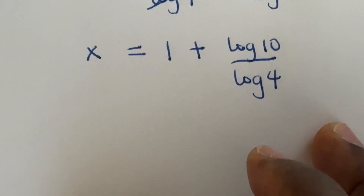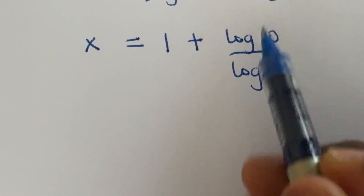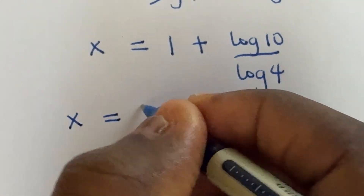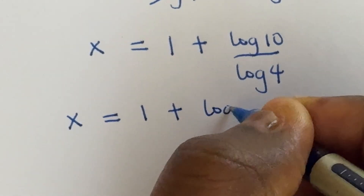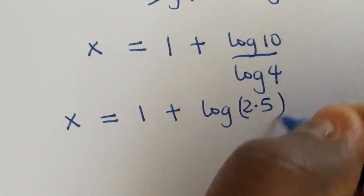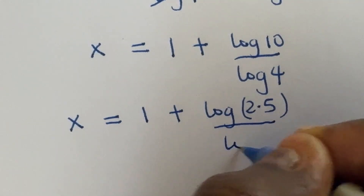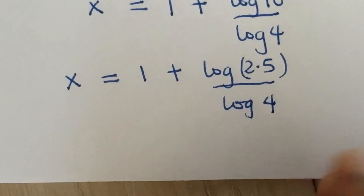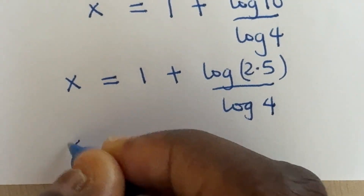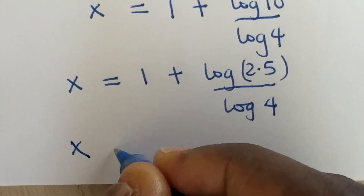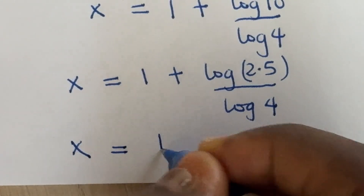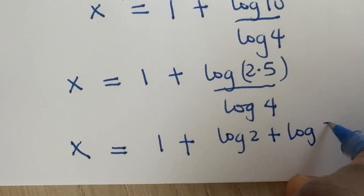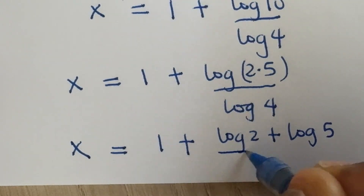Looking at 10, we can still break log 10 into log of 2 times 5, giving us x is equal to 1 plus log of 2 times 5, over log 4. And then we separate 2 times 5 into log 2 plus log 5, divided by log 4.